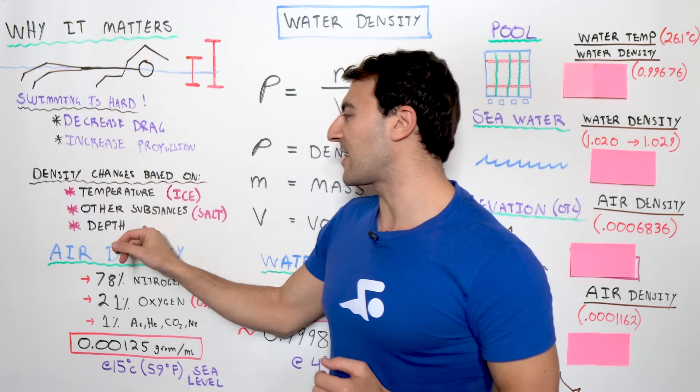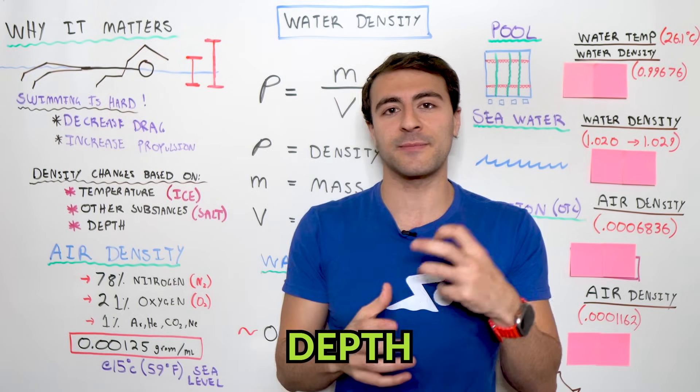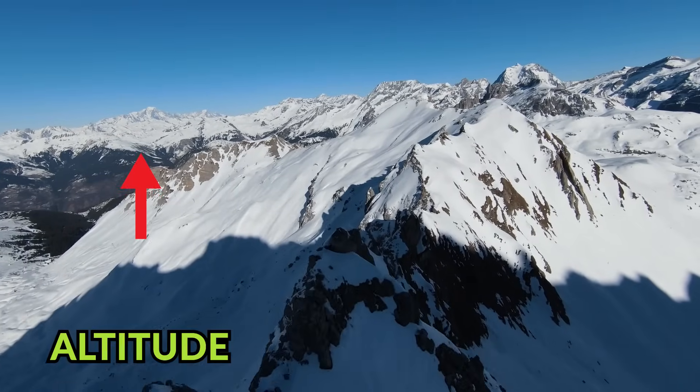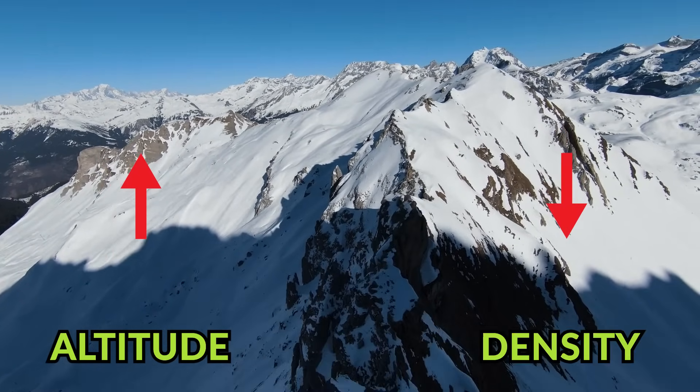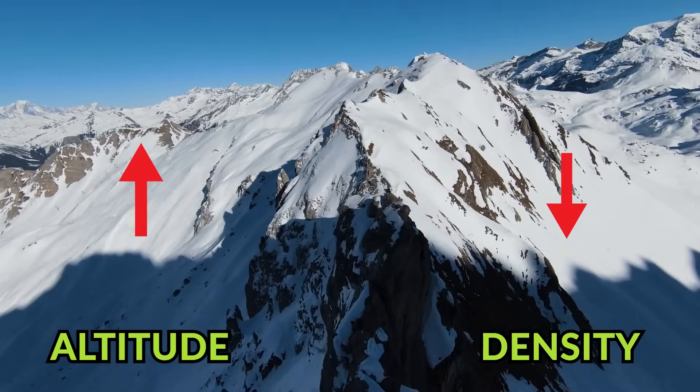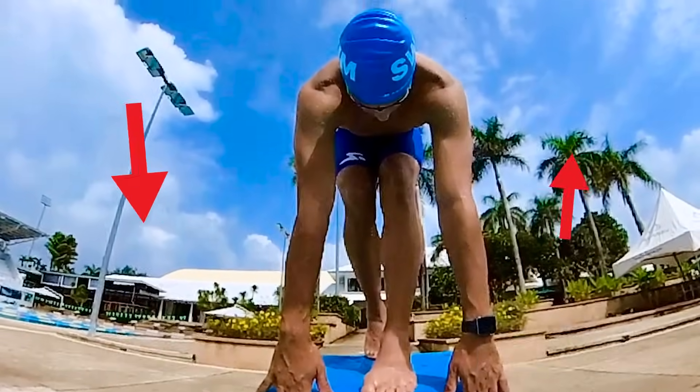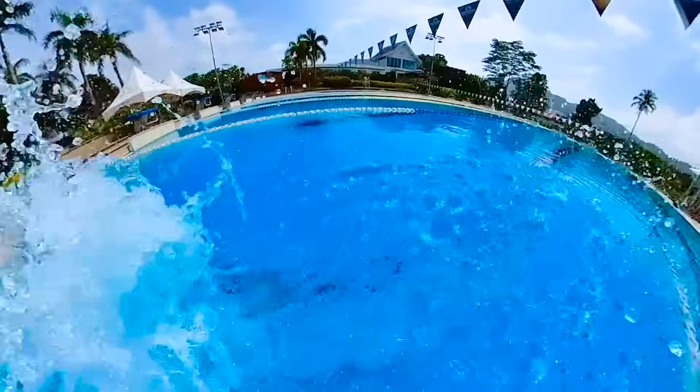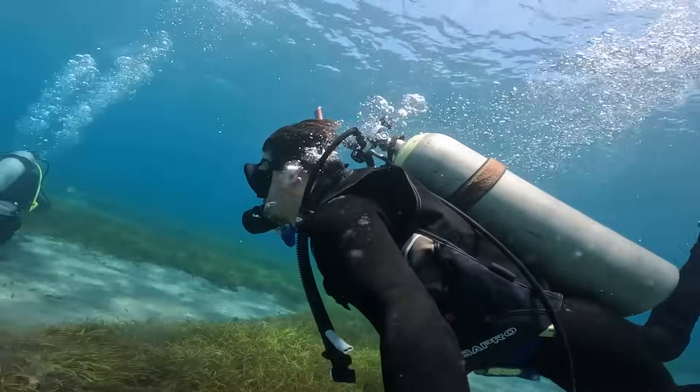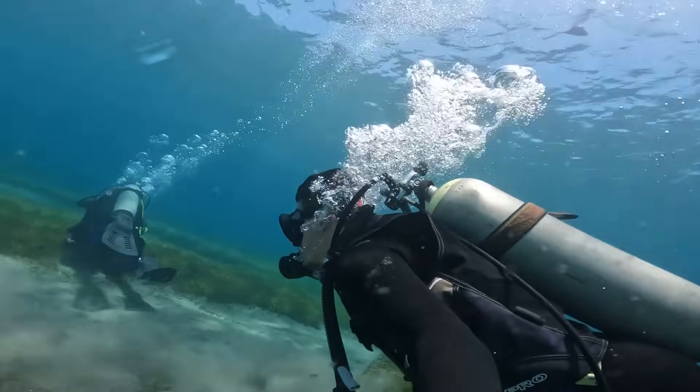Another thing that can change the density of water is the depth and this works in the inverse when we're talking about air. So, as you change in altitude, you actually will decrease how dense the air is. The air is less dense the further you go up and the inverse is true when you go underwater. So, the deeper you go, the denser it is. Imagine if you go scuba diving, you feel the pressure because the water is just being compacted and it's more dense per unit of volume.